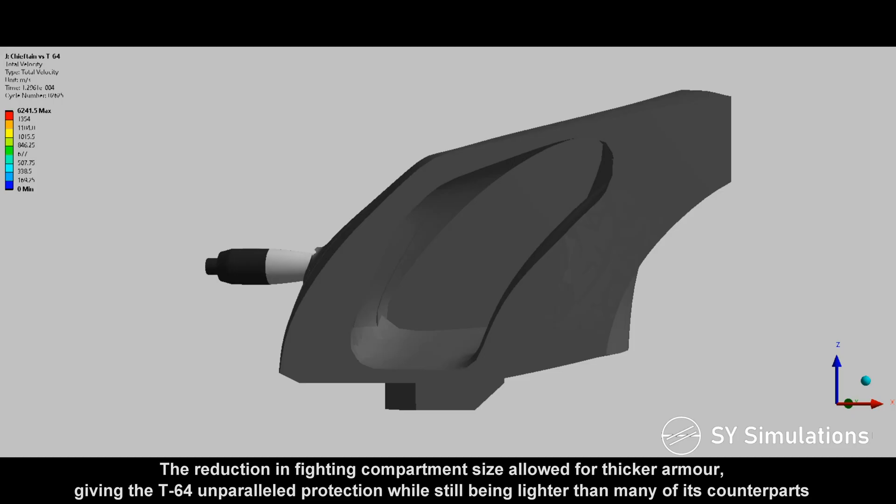The reduction in fighting compartment size allowed for thicker armor, giving the T-64 unparalleled protection while still being lighter than many of its counterparts.